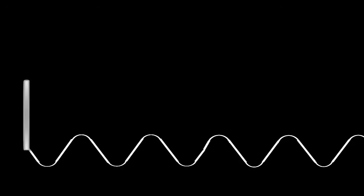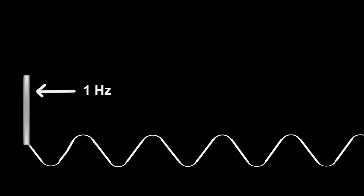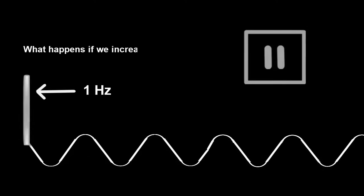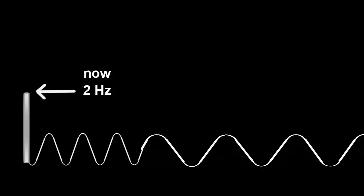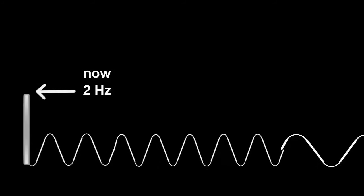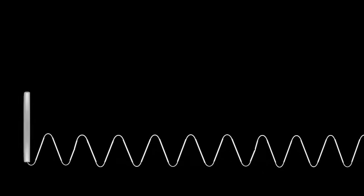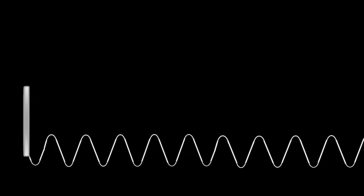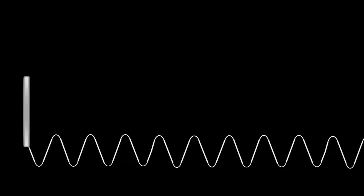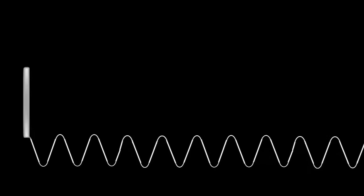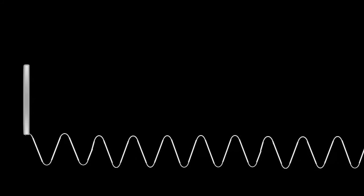Does anything happen if we increase the frequency by dipping the source in and out more often? Let's double it from 1 to 2 hertz. Looking at the wavelength, we can see that it gets shorter. We double the frequency, and the wavelength looks about half what it was before.